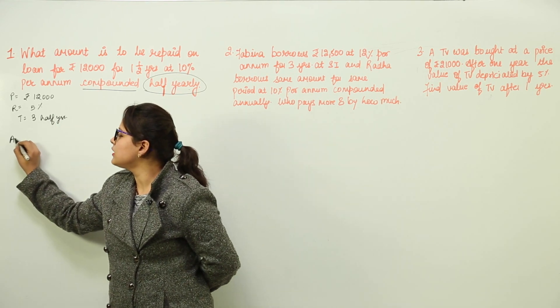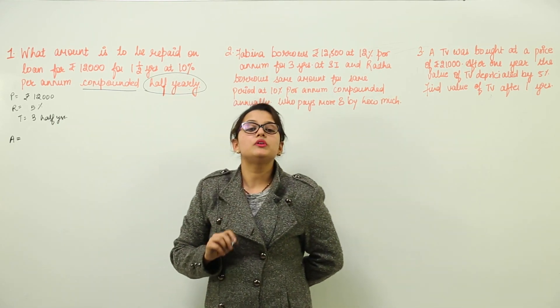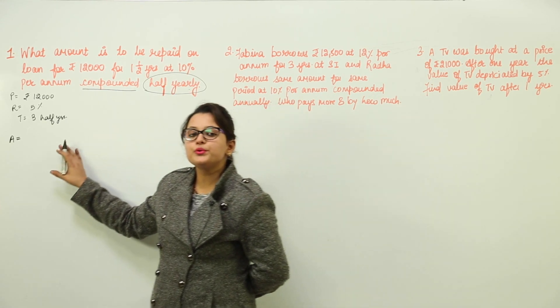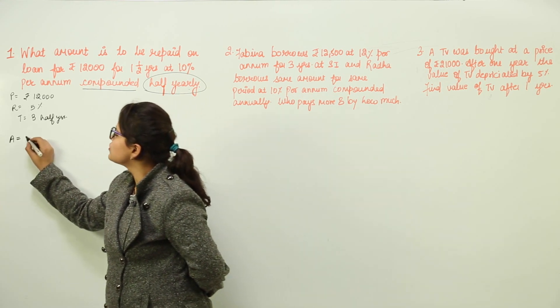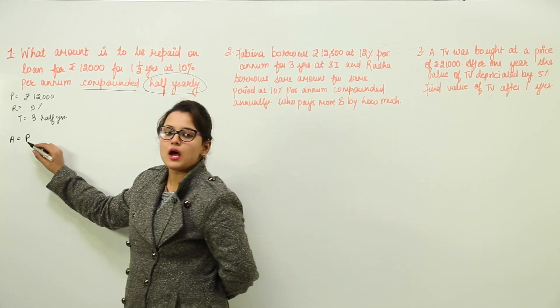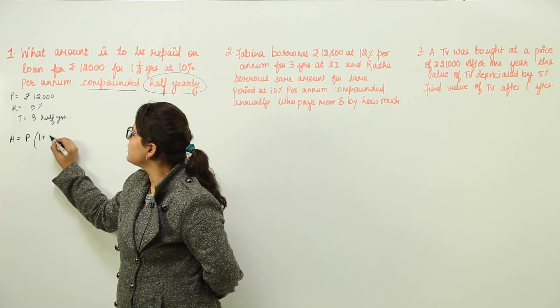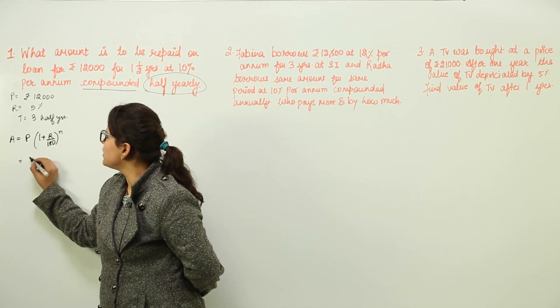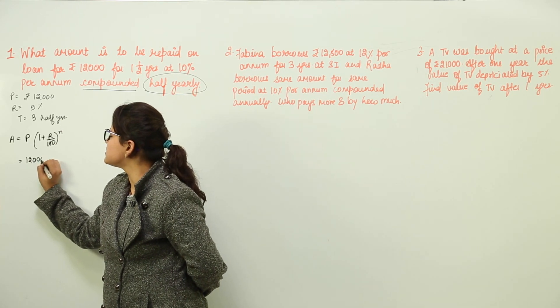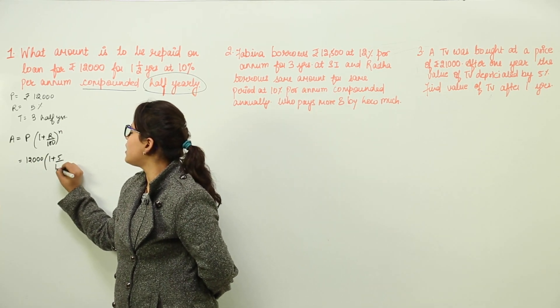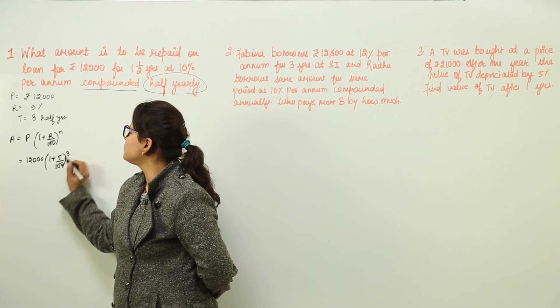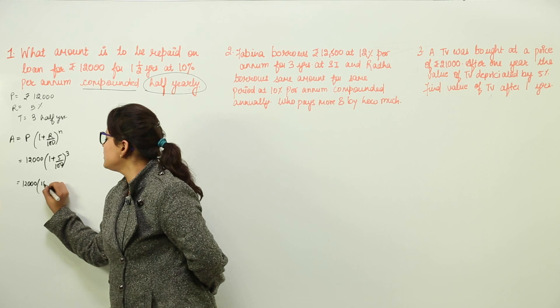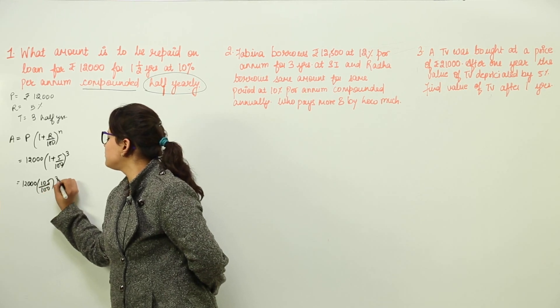Let me introduce you with another formula for calculating amount directly. The formula says, amount is equal to the principle into 1 plus rate upon 100 raised to power n. Over here, the principle is 12,000 in brackets 1 plus 5 over 100 raised to power 3. This solves equal to 12,105 upon 100 raised to power 3.